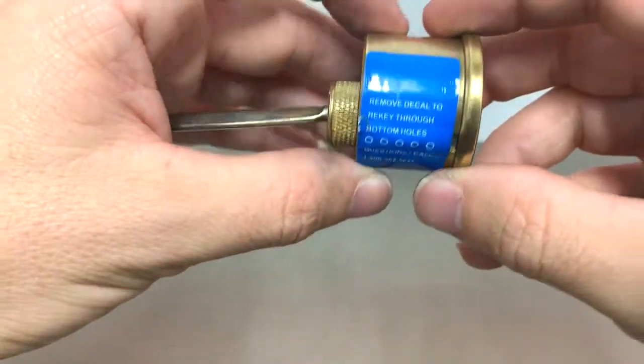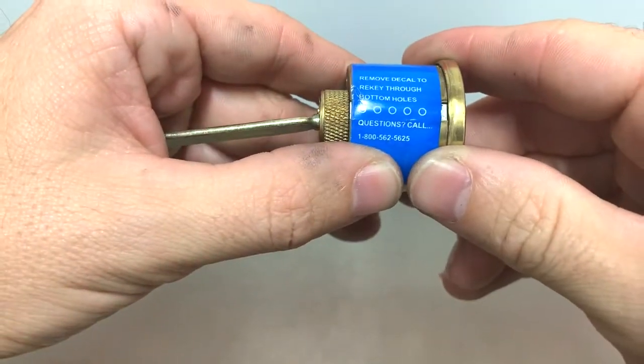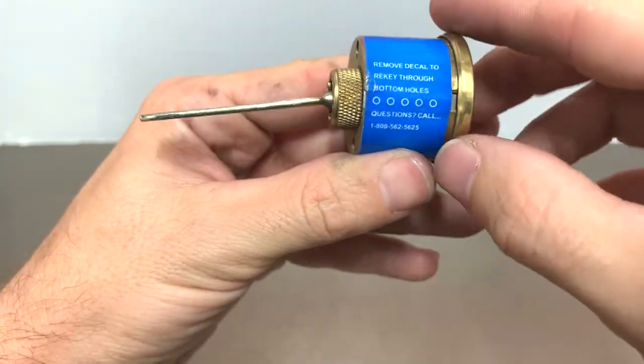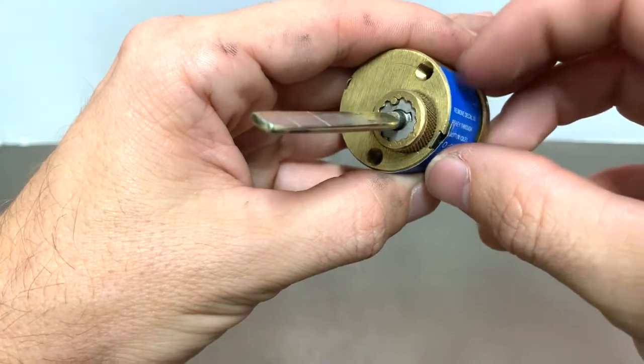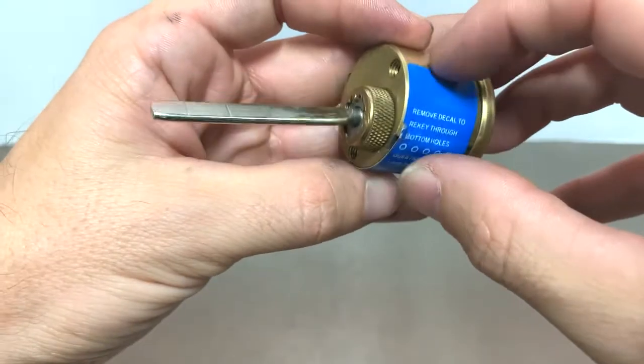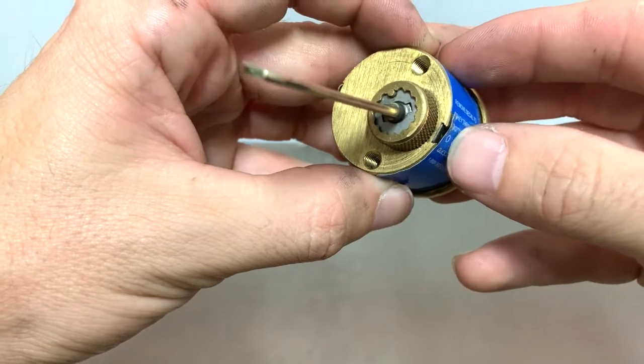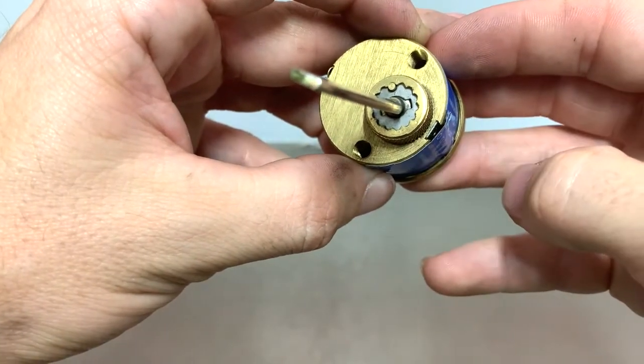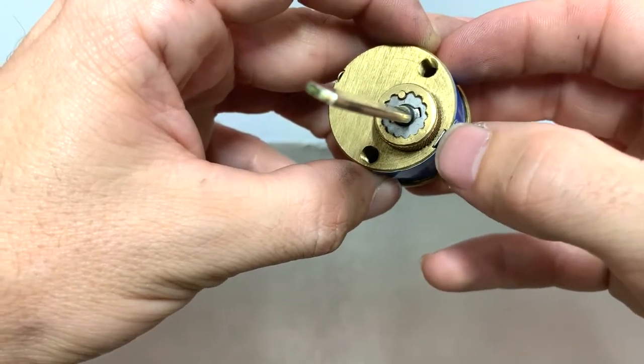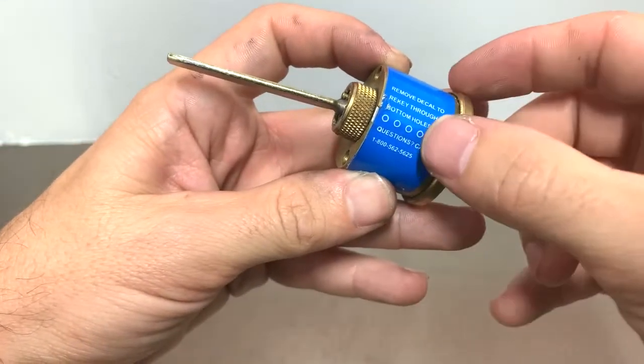In the video you guys might have noticed this little sticker decal here—it says 'remove decal to rekey' and to rekey through the bottom holes here. If you were to remove this, it's basically just a sticker, and depending how old the lock is depends on how sticky it still is. Someone could have already tried this and there's a little cap underneath. If someone's tried this before, I've seen it where they've forgot to put the cap back on and just stuck it back with this decal just holding the pins.